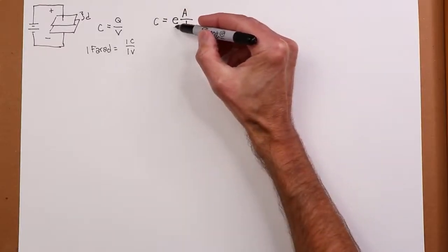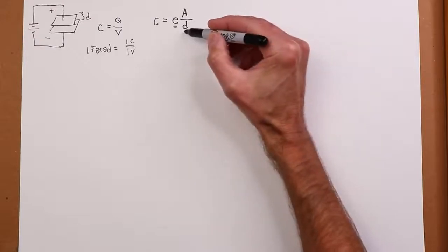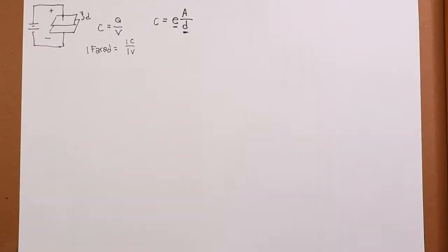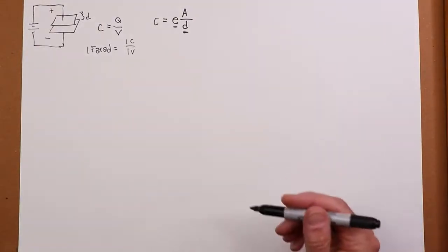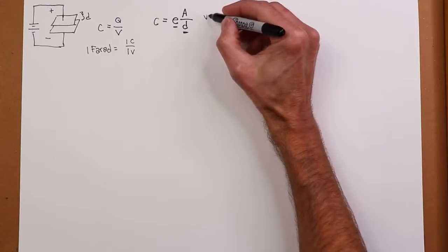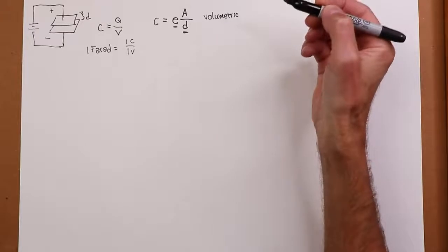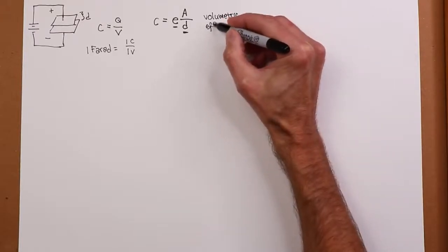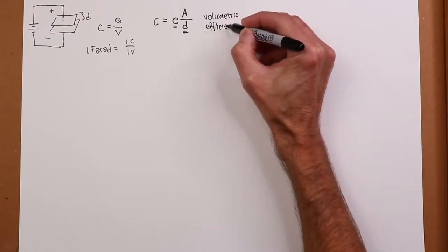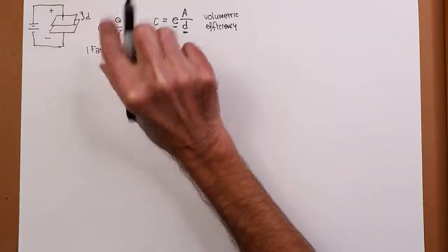You know, I could have something that has a really, really high permittivity, but maybe the breakdown strength isn't so good. So I have to expand out that plate spacing. And this leads into something we call volumetric efficiency. And volumetric efficiency basically means how many farads can I pack in a box?